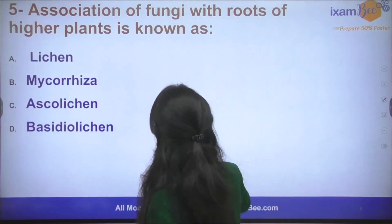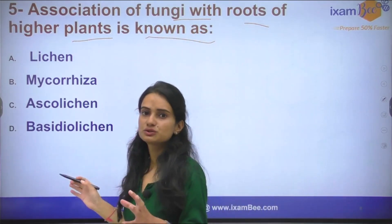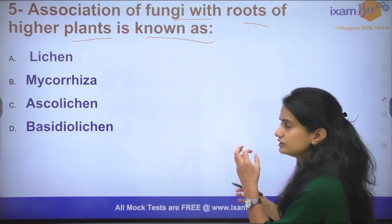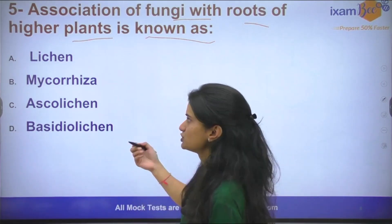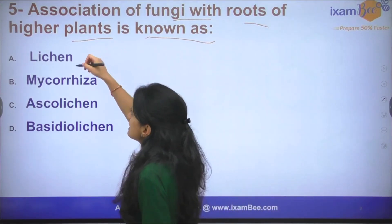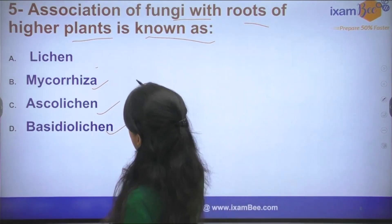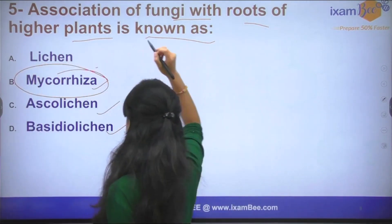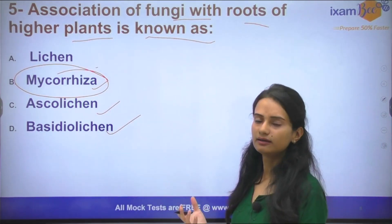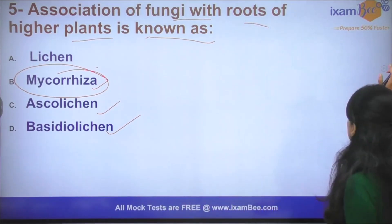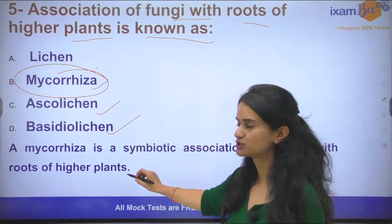The next question: Association of fungi with roots of higher plants is known as? The options are lichen, Mycorrhizae, Ascolichen, and Basidiolichen. The answer is Mycorrhizae. Mycorrhizae is a fungal association that provides the plant with nutrients. Mycorrhizae is a symbiotic association of fungus with the roots of higher plants.